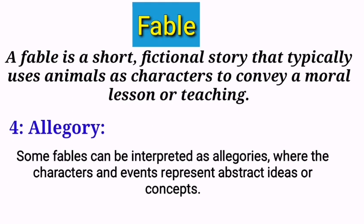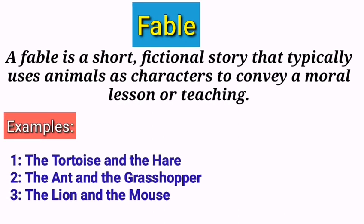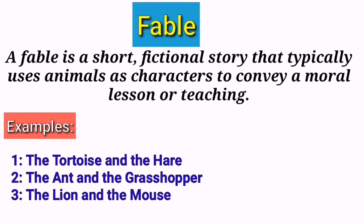These are the chief characteristics of a fable. Examples include The Tortoise and the Hare, The Ant and the Grasshopper, and The Lion and the Mouse. In these stories the characters are animals, but these animals talk, think, and behave like human beings. By this way, a writer teaches the reader a moral lesson. If you have enjoyed this lecture then please don't forget to like and subscribe to the channel. Thank you.